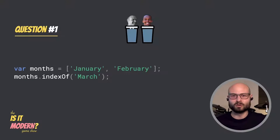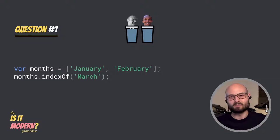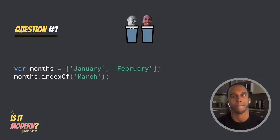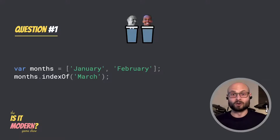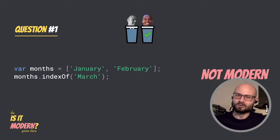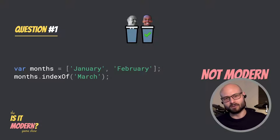For question one, we have these two lines of code. What do you think, Hussein? Modern or not modern? I see months is declared using var, and I'm pretty sure indexOf was introduced in ES5. So this is not modern? Correct. There's no inherently new syntax being used here, so it's not modern.